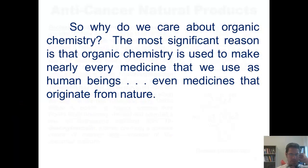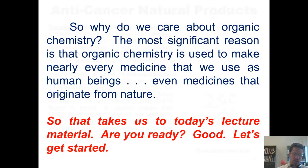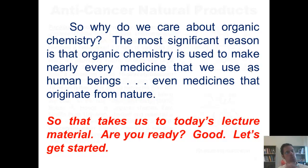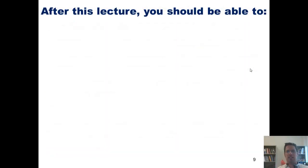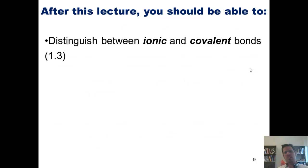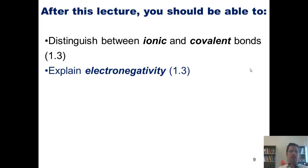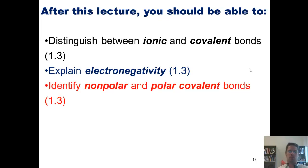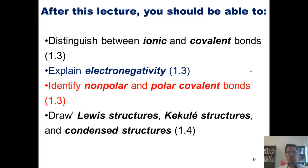So that takes us to our lecture material for today. I should warn you that nearly all of the material in today's lecture will review stuff that you should have learned back in freshman chemistry. Nevertheless, it is pertinent groundwork for understanding the rest of organic chemistry, so we will cover it. After today's lecture, you should be able to: distinguish between ionic and covalent bonds; explain electronegativity; identify nonpolar and polar covalent bonds; and draw Lewis structures, Kekulé structures, and condensed structures.